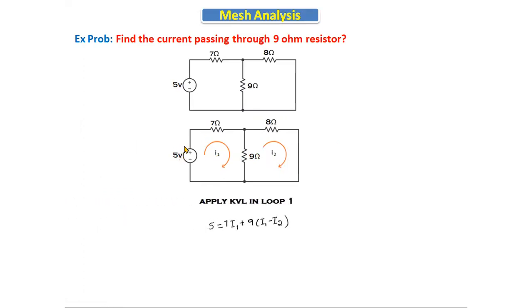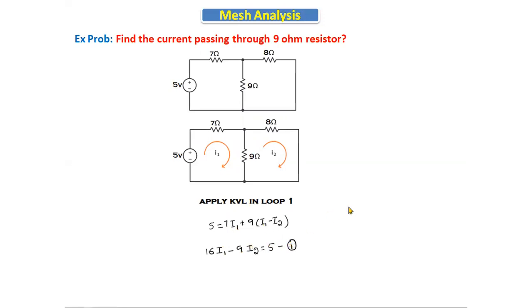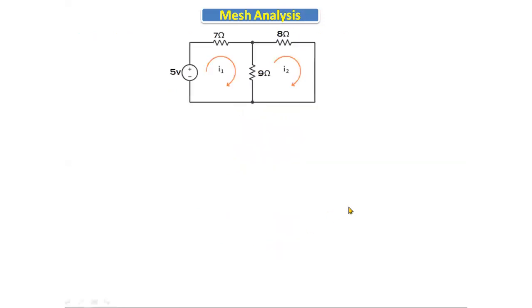Applying KVL in loop one: -2 + 5 = 7·I1 + 9·(I1 - I2). For the 9 ohm resistor there are two currents, I1 and I2. Simplifying: 7·I1 + 9·I1 - 9·I2 = 5, so 16·I1 - 9·I2 = 5. This is equation number one.